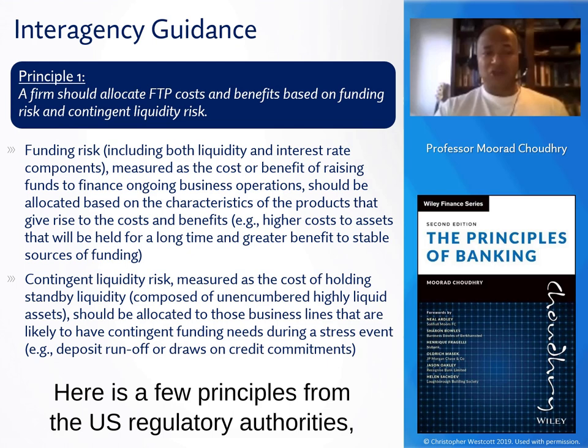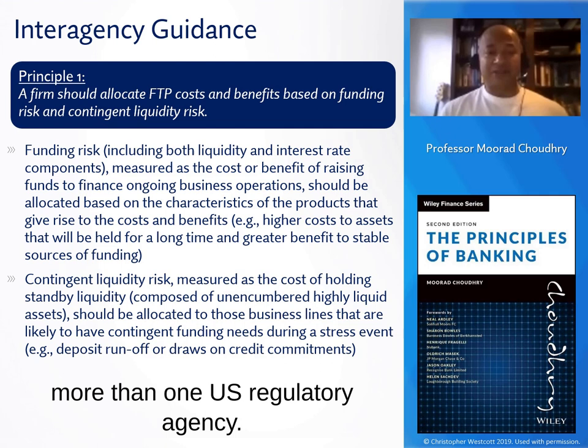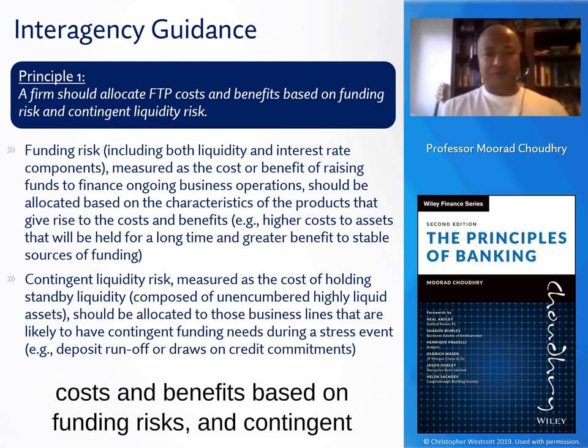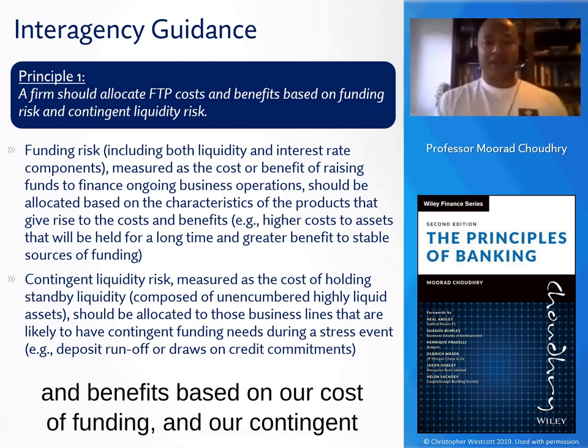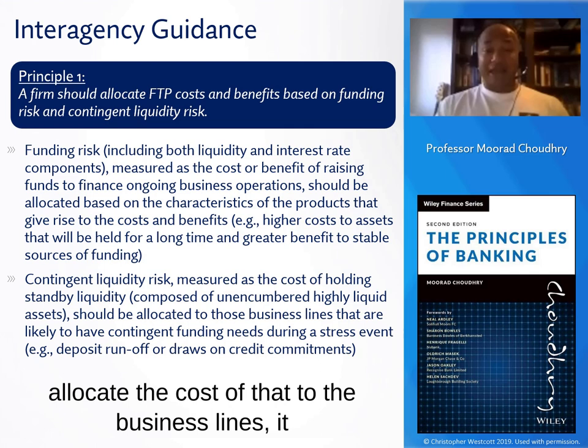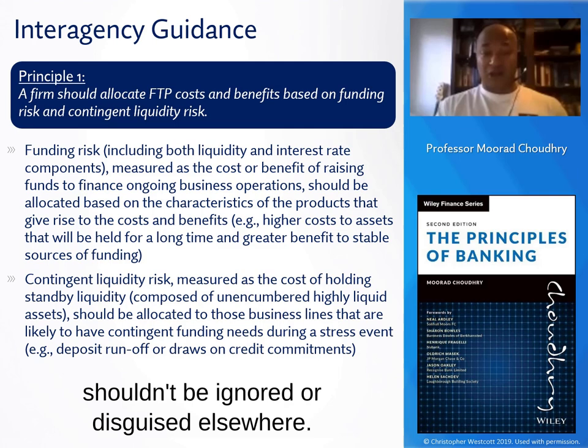Here are a few principles from the US regulatory authorities — more than one, because these principles have emanated from more than one US regulatory agency. Principle one: a firm should allocate funds transfer pricing costs and benefits based on funding risk and contingent liquidity risk. In other words, we have to allocate costs and benefits based on our cost of funding and our contingent liquidity cost and risk exposure. What that means is we allocate the cost of that to the business lines — it shouldn't be ignored or disguised elsewhere.